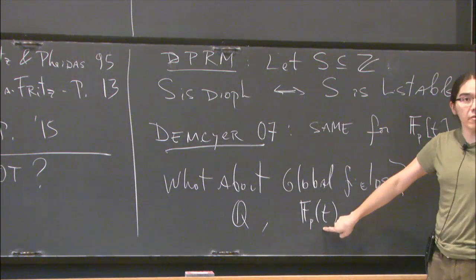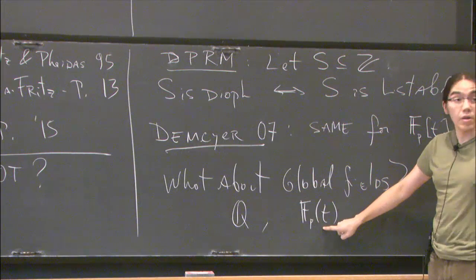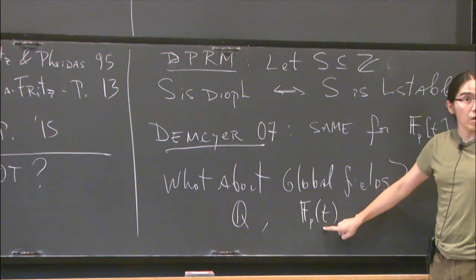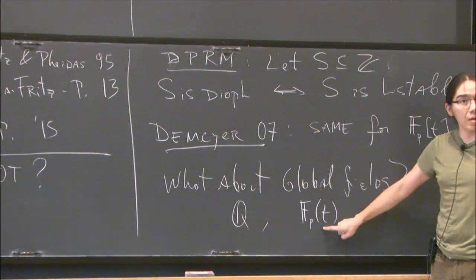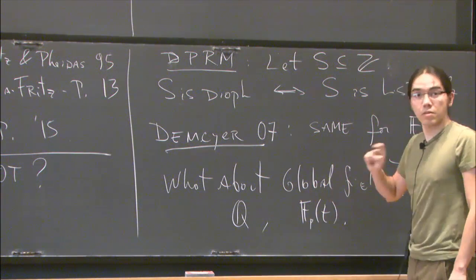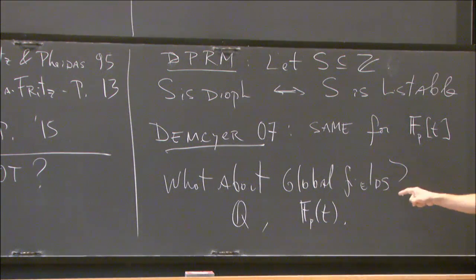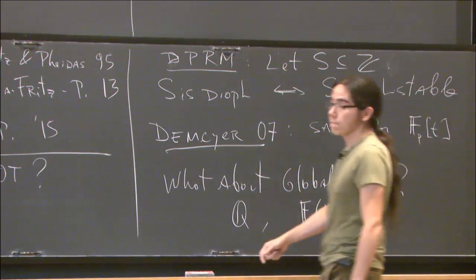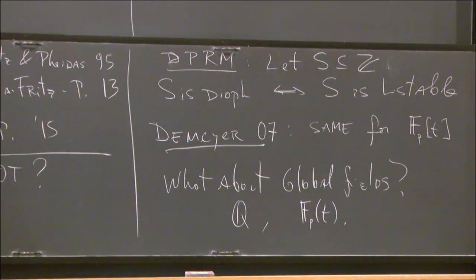And here, it is a theorem of Thanases Pheidas that Hilbert's 10th problem is unsolvable. However, we still don't know any example of a non-Diophantine set which is listable. So we don't understand the Diophantine sets here, although we know that the Diophantine problem is undecidable. So undecidability without understanding the sets—you encode something undecidable inside. And for this, you need to construct an example of a finding Diophantine sets. But you don't really need to classify all of them.